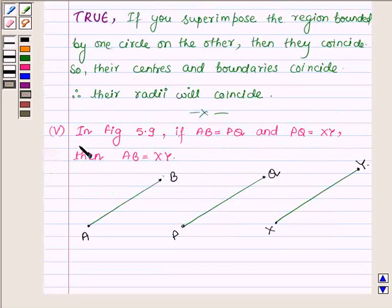And now proceeding on to the fifth part which says: in Figure 5.9, if AB is equal to PQ and PQ is equal to XY, then AB is equal to XY.